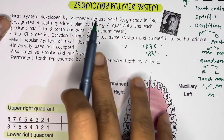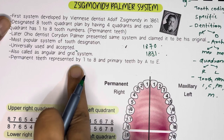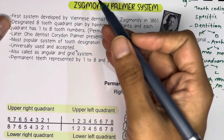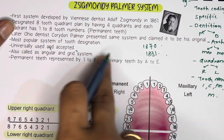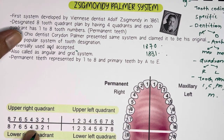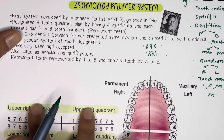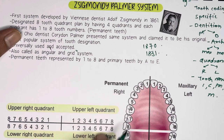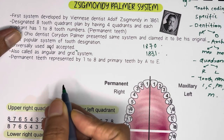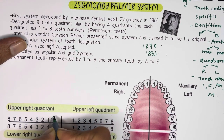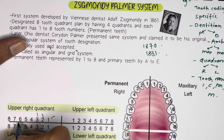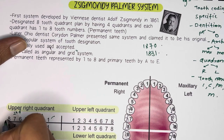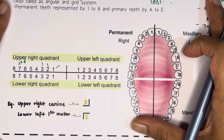The Zsigmondy-Palmer system is universally used and accepted. In this system, permanent teeth are represented by numbers 1 to 8, and primary teeth are represented by letters A to E. It is the most popular system of tooth designation. The four quadrants cover maxillary and mandibular arches, with eight teeth per quadrant. The numbering correspondence is: 1 = central incisor, 2 = lateral incisor, 3 = canine, 4 = first premolar, 5 = second premolar, 6 = first molar, 7 = second molar, and 8 = third molar.